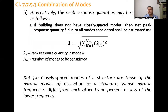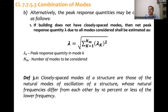Here the term 'closely spaced modes' is used. What does this mean? Closely spaced modes of a structure are those natural modes of oscillation whose natural frequencies differ from each other by 10 percent or less of the lower frequency. For example, if one frequency is 30 radians per second and another is 34 radians per second, 10% of 30 is 33, and since 34 exceeds 33, they are not closely spaced. But if one mode frequency is 30 and another is 32.5 radians per second, then they are closely spaced modes.